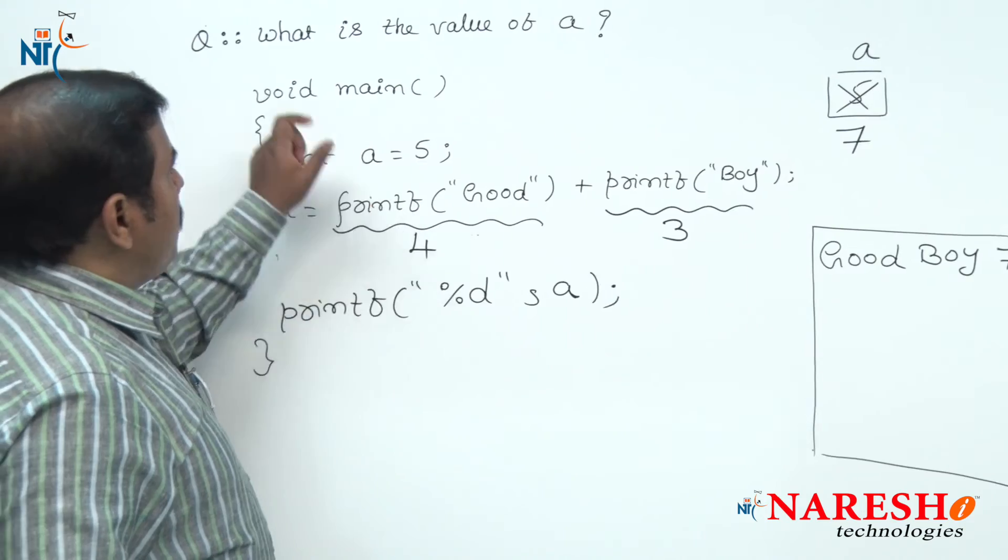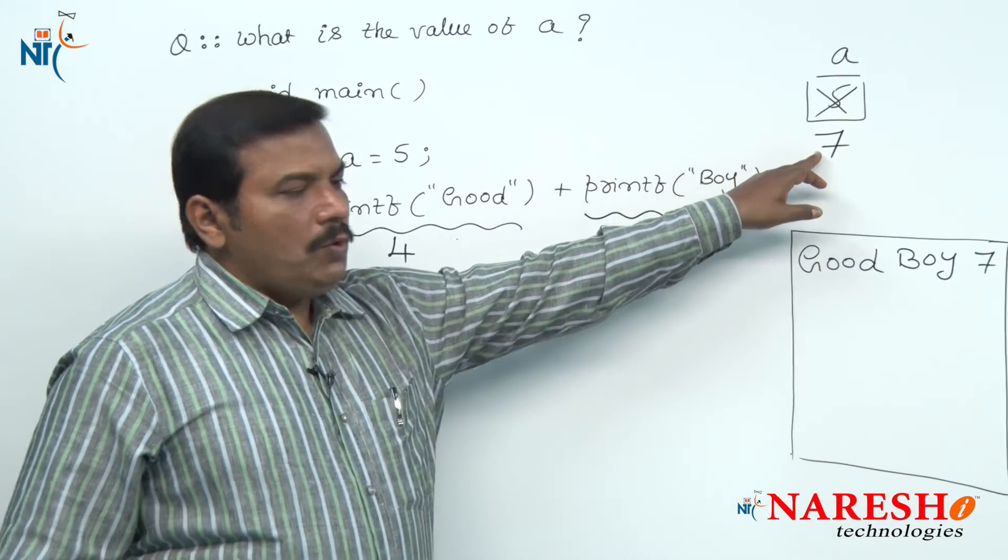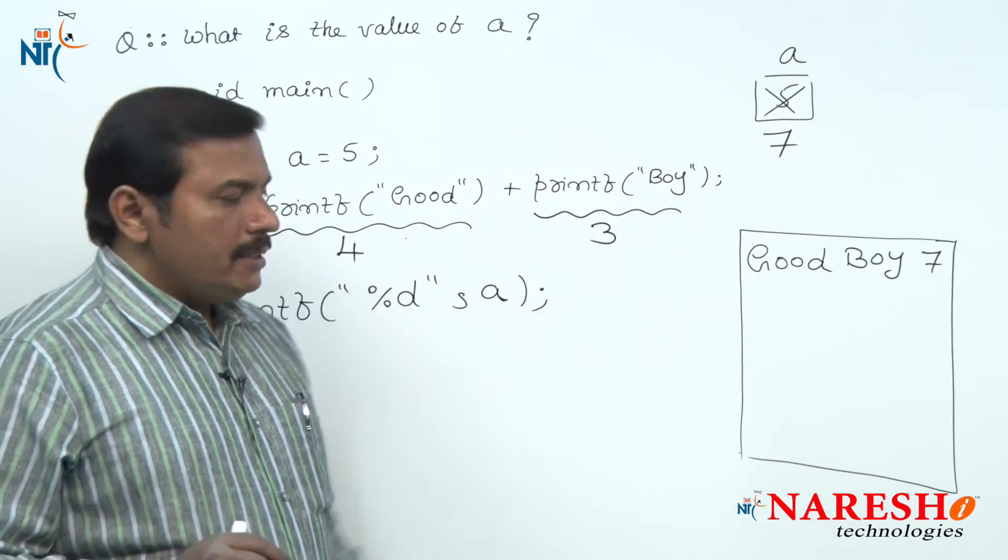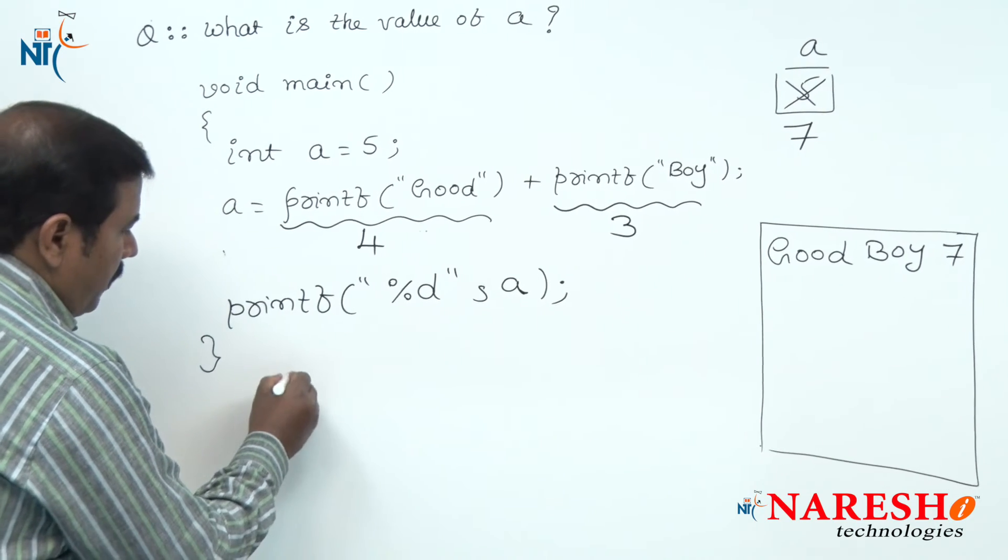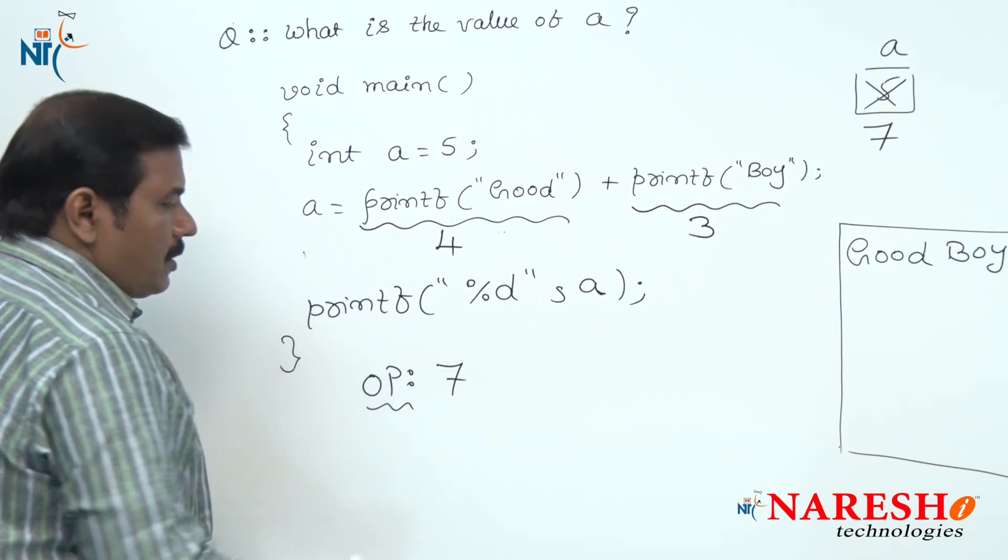But the question given here is: what is the value of A? The final value held by variable A is 7, hence the value of A is 7. This is the result of this code.